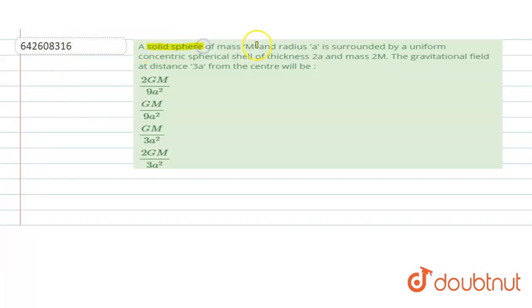solid sphere of mass M and radius a is surrounded by a uniform concentric spherical shell of thickness 2a and mass 2M. We have to find the gravitational field at a distance 3a from the center.